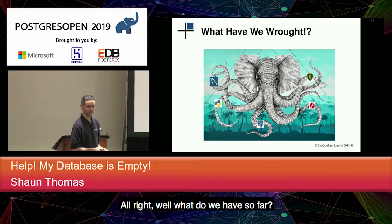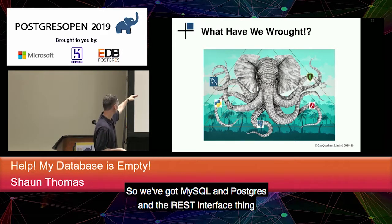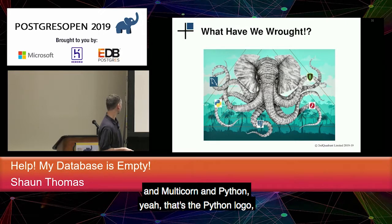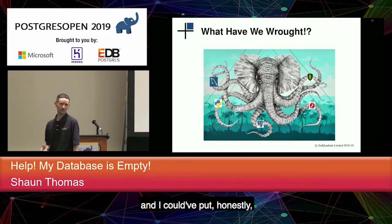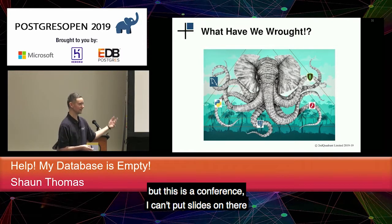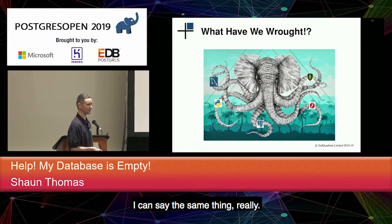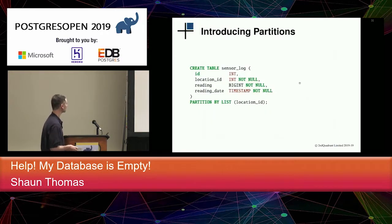So what do we have so far? We've got MySQL, Postgres, that REST interface thing, Multicorn, and Python. I could have put in 20 or 30 more things, but this is a conference. There's really only so many ways I can say the same thing.